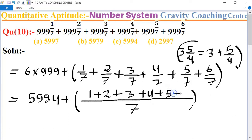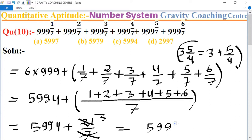Five and six. So equal to five double nine four plus twenty one upon seven. So seven divided into twenty one, so five triple nine plus three equal to five nine nine seven which is the required answer.